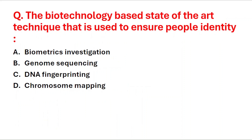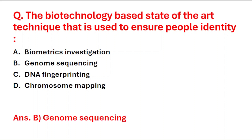Next question: the biotechnology-based state-of-the-art technique used to ensure a person's identity is — A: biometric investigation, B: genome sequencing, C: DNA fingerprinting, D: chromosome mapping. The right answer is option B, genome sequencing.